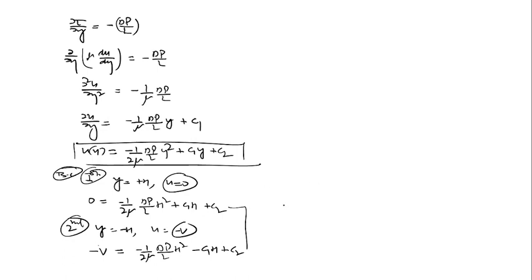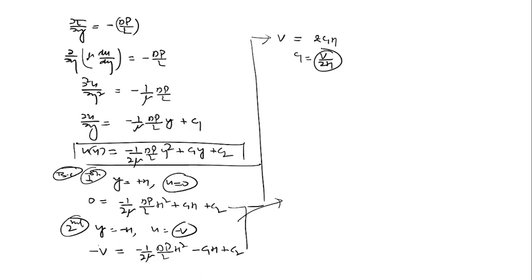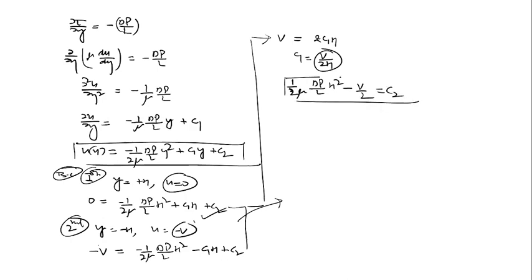Subtracting the two boundary condition equations: the 2mu terms cancel, and we get v equals 2 times C1 times h, so C1 equals v over 2h. To find C2, substituting C1 back into the first equation: C2 equals 1 over 2mu times delta_p over l times h squared minus v over 2. These are the values of C1 and C2.